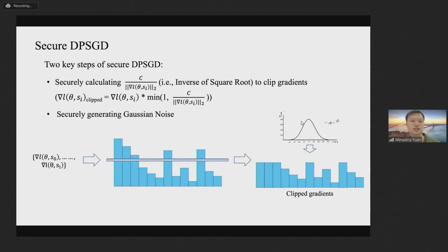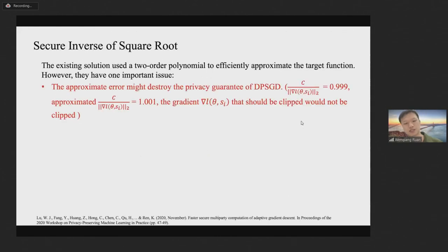Therefore, in order to implement DPSGD based on secret sharing protocols, it is necessary to securely compute the inverse of square root and securely generate Gaussian noise. I first introduce our secure inverse of square root protocol. The existing solution used a two-order polynomial to efficiently approximate the target function. However, its approximation error may destroy the privacy guarantee of DPSGD.